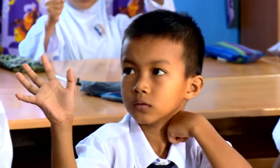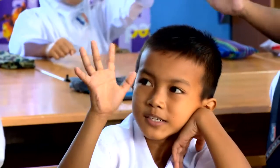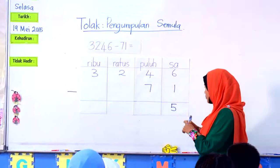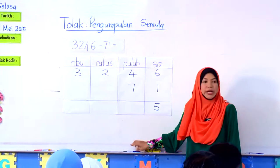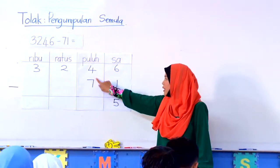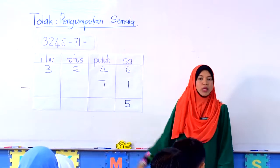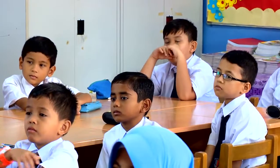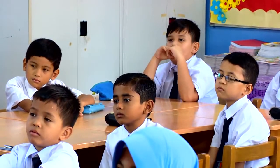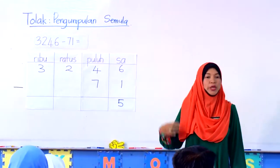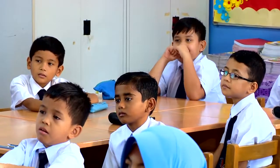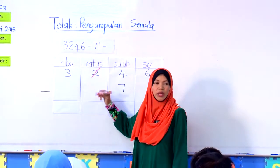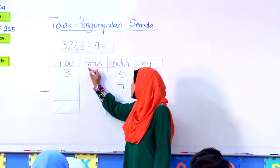Berapakah jari yang masih terbuka? 5. Seterusnya, kita nak tolak 4 tolak 7. 4 tolak 7, tidak boleh? Tidak boleh — kerana 4 lebih kecil daripada 7. Apa yang perlu kita buat? Pinjam. Kita pinjam daripada rumah ratus. 2 pinjam 1 tinggal berapa? 1. Tinggal 1.